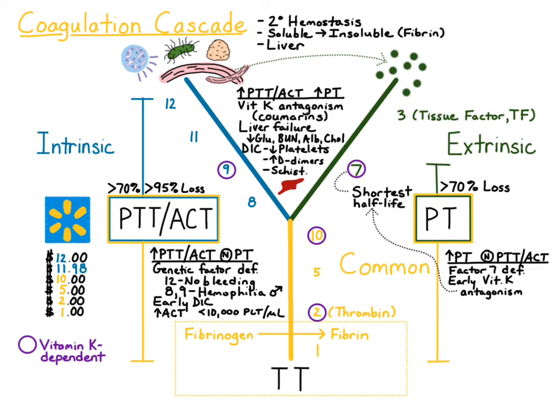Because there are clots forming within blood vessels, red cells can be sheared when they flow through those fibrin strands. Think of the fibrin strands as kind of like a spider web within the blood vessel — as the red blood cells pass through that spider web, they get sheared. So you look for schistocytes, or red cell fragmentation.